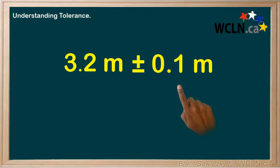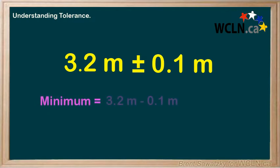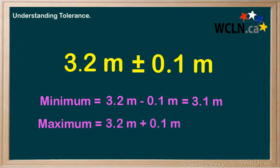So let's explain the plus or minus. The whole thing tells us that we would allow or tolerate a minimum dimension of 3.2 meters minus 0.1 meters, or 3.1 meters. Also, we would allow or tolerate a maximum dimension of 3.2 plus 0.1 meters, or 3.3 meters. So our allowable outcomes include anything between 3.1 and 3.3 meters, and our nominal value of 3.2 meters sits right in the middle of that range.